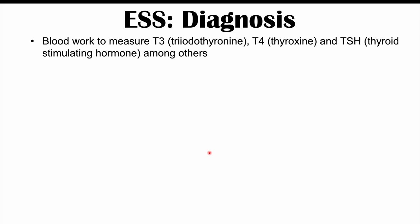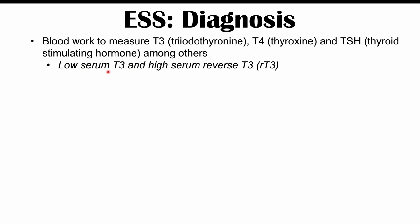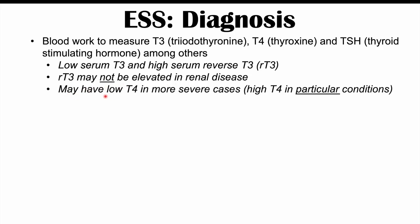Diagnosis of euthyroid sick syndrome includes blood work measuring thyroid hormones: T3 (triiodothyronine), T4 (thyroxine), TSH (thyroid stimulating hormone), and others. The key pattern to recognize is low serum T3 and high serum reverse T3 (RT3). Reverse T3 is an inactive form of T3 where the iodines are in different positions. It's important to note that RT3 may not be elevated in renal disease. In some cases, particularly more severe ones, patients may also have low T4 and low free T4. There are also cases where T4 is high, which will be discussed with the classifications.